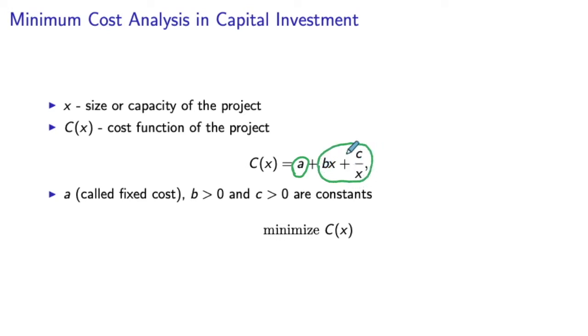This variable cost consists of two parts. One part is linear given by bx. Essentially, you could think of this as a per unit production cost. And then there is a cost part that reflects the economies of scale.